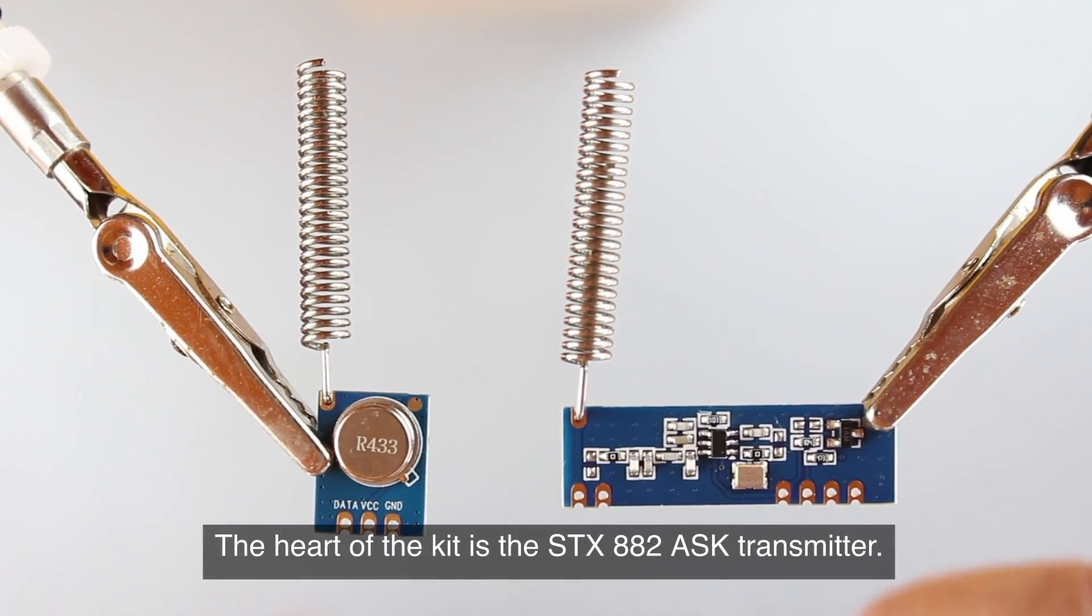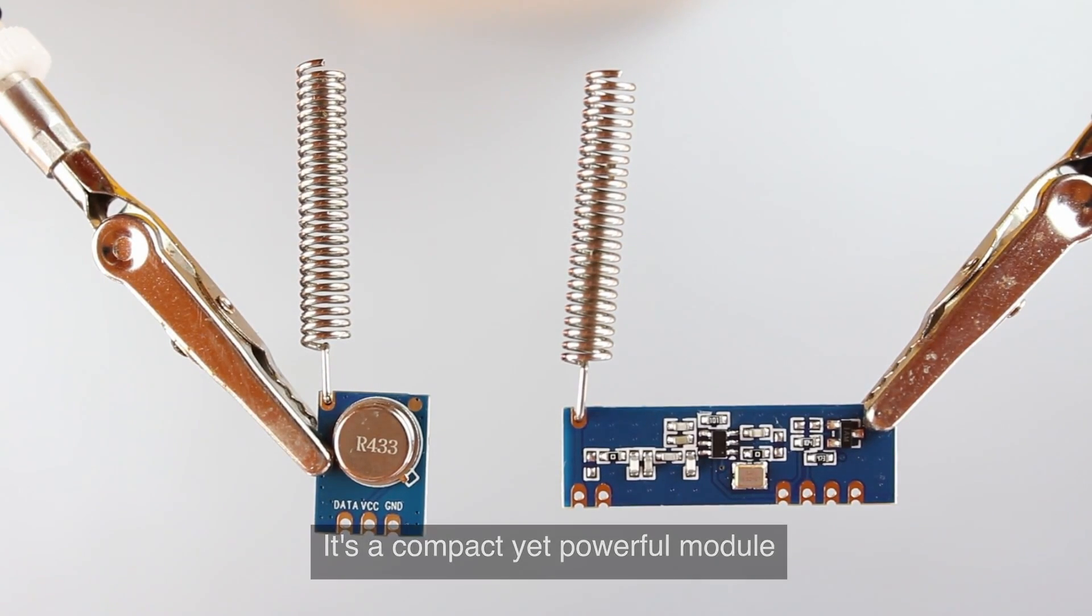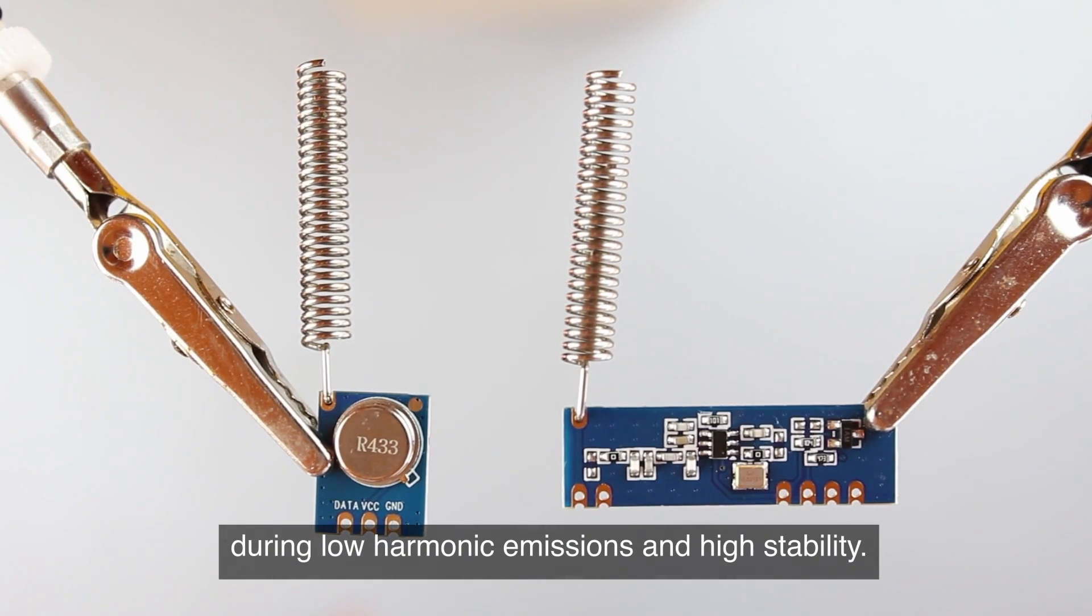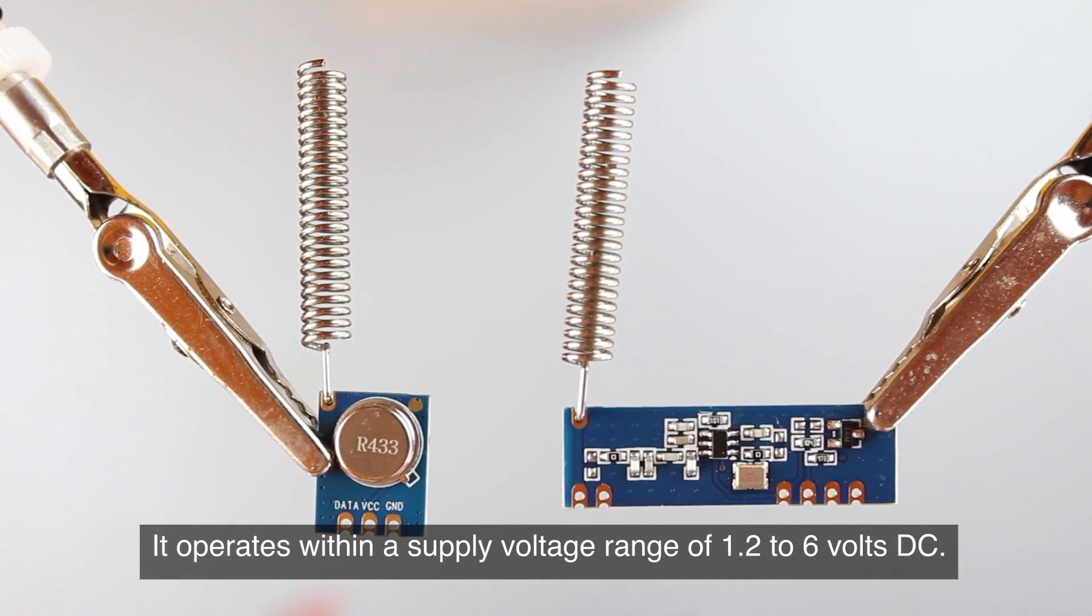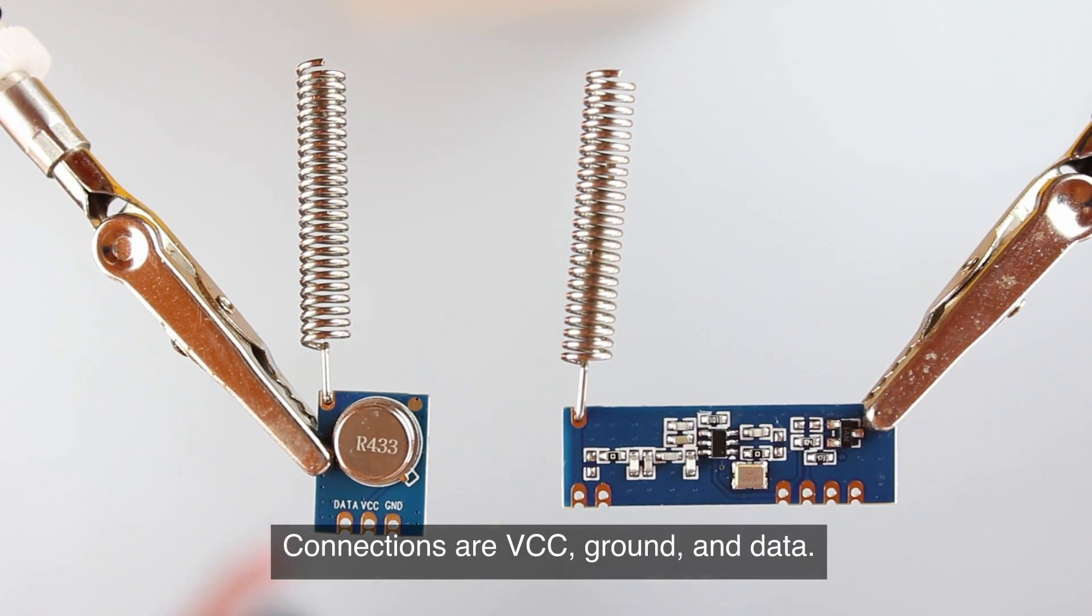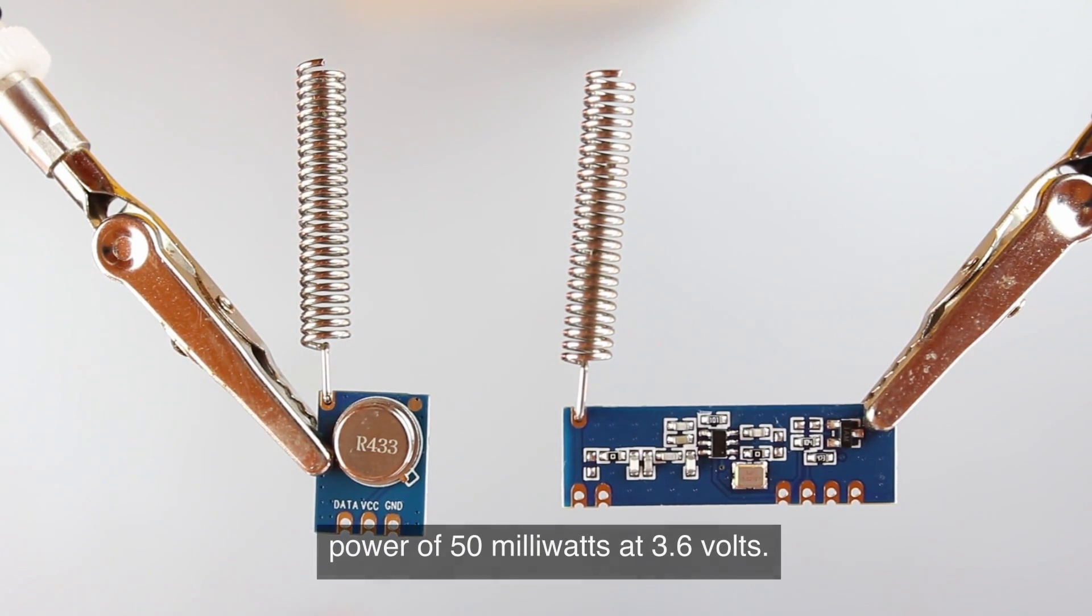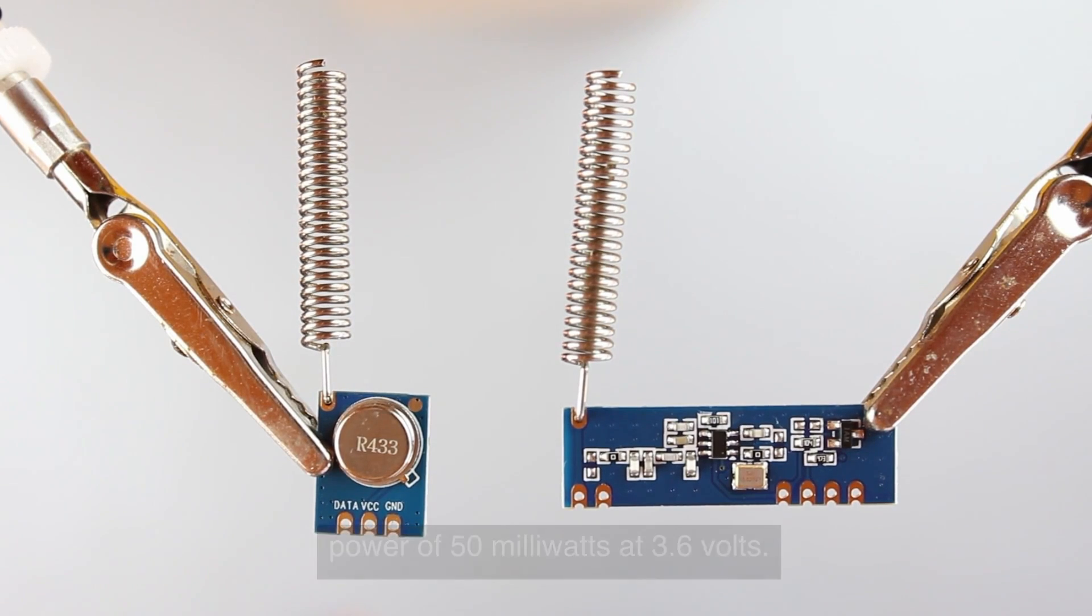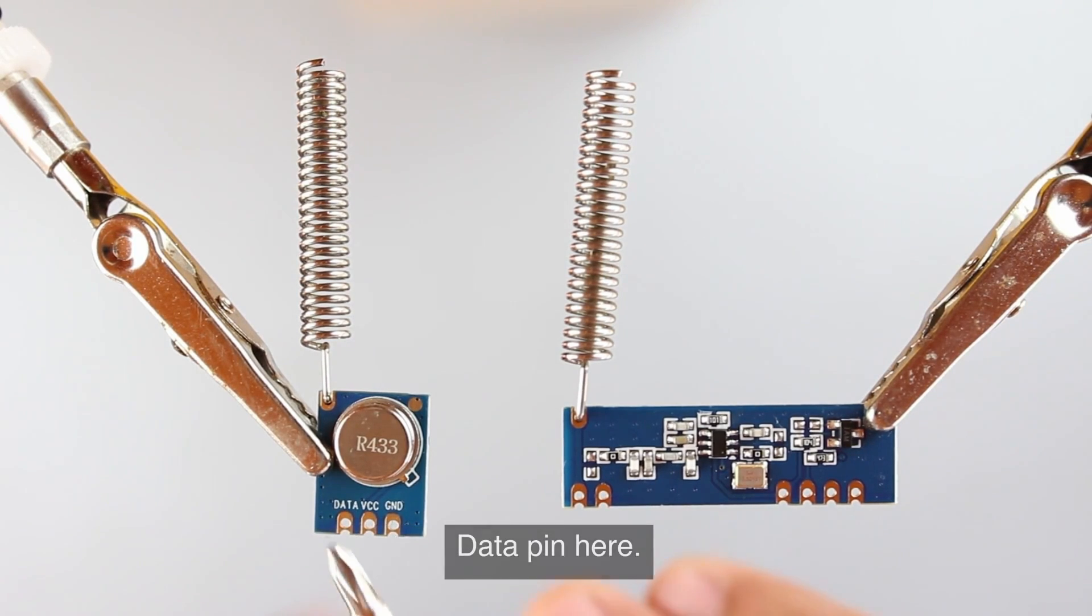The heart of the kit is the STX882-ASK Transmitter. It's a compact yet powerful module featuring low harmonic emissions and high stability. It operates within a supply voltage range of 1.2 to 6 volts DC. Connections are VCC, ground, and data. The STX882 achieves a respectable transmission power of 50 milliwatts at 3.6 volts. Its design facilitates a straightforward connection to a microcontroller via the single data pin here.